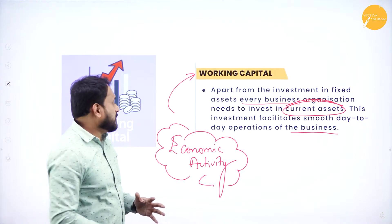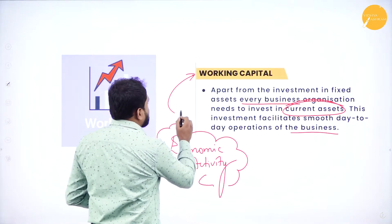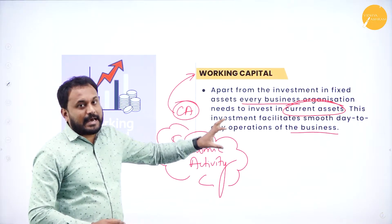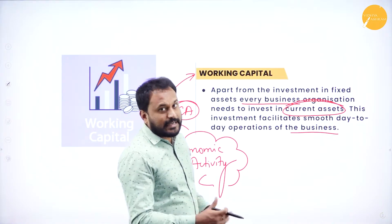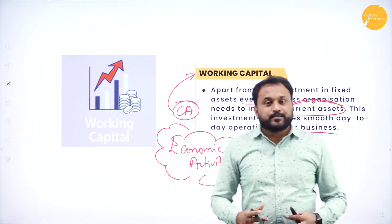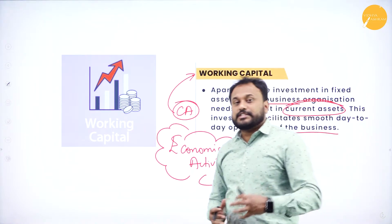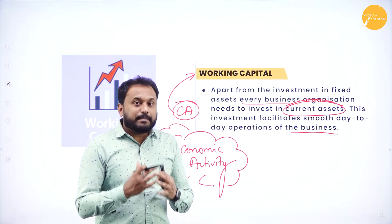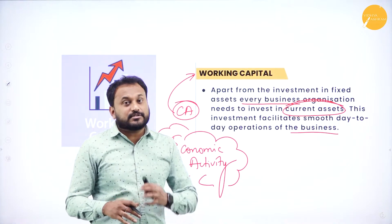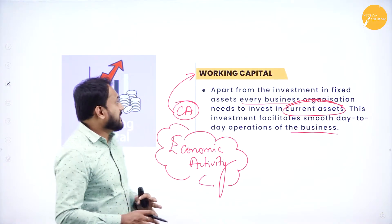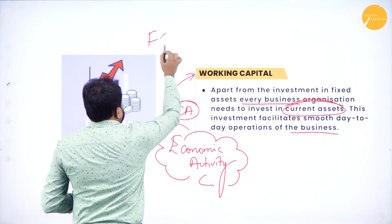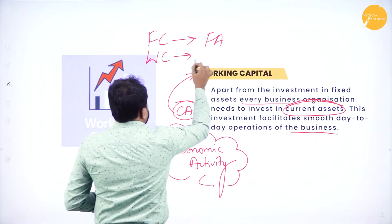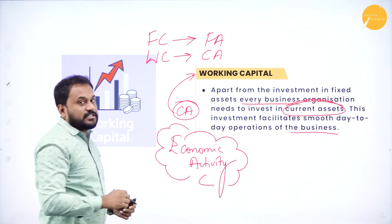This is what working capital is all about — you purchase the current assets, and that we call working capital. A quick recall: whenever you want to buy current assets, which capital will you use? It's always working capital. For buying or purchasing fixed assets, you will use fixed capital. For fixed capital, it's all about fixed assets. For working capital, it's all about current assets. That is the difference.